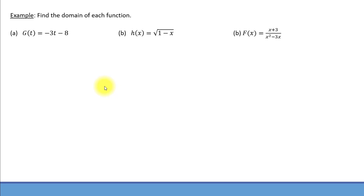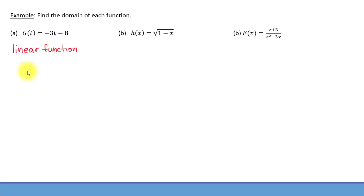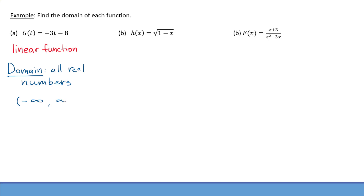The first one is the function g of t. This is called function notation, where g is the name of the function and t is the variable of the input. When we need to find the domain, we need to describe all possible inputs for the given function such that all those inputs can produce an output. In this particular case, we're looking at a linear function. For any linear function, the domain always includes all real numbers, because no matter what real number we use for t, we can always multiply that number by negative three and then subtract eight to obtain an output. If we want to express this answer using interval notation, it's going to be the interval from negative infinity to infinity.